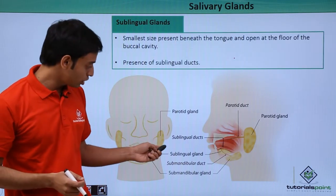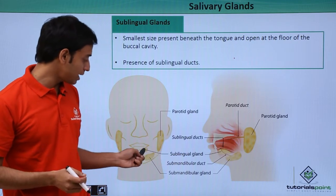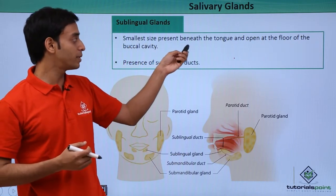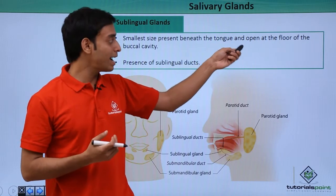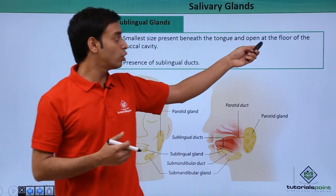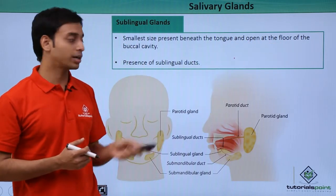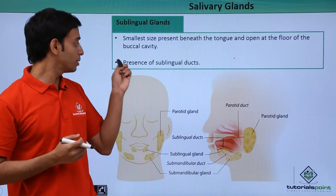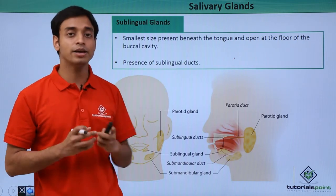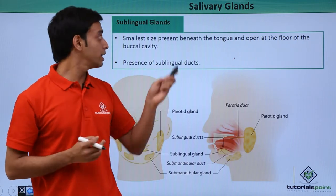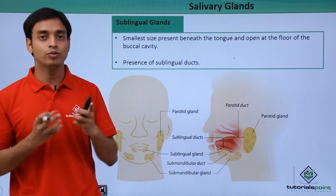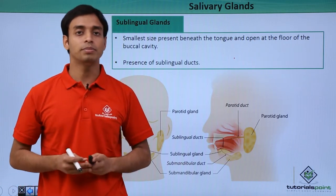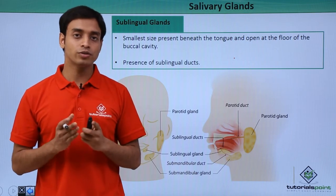The third type of salivary gland is called the sublingual gland. This is the smallest salivary gland, present beneath the tongue, and it opens at the floor of the buccal cavity. There are many sublingual ducts present in the sublingual gland, which carry the secretions of saliva into the buccal cavity.